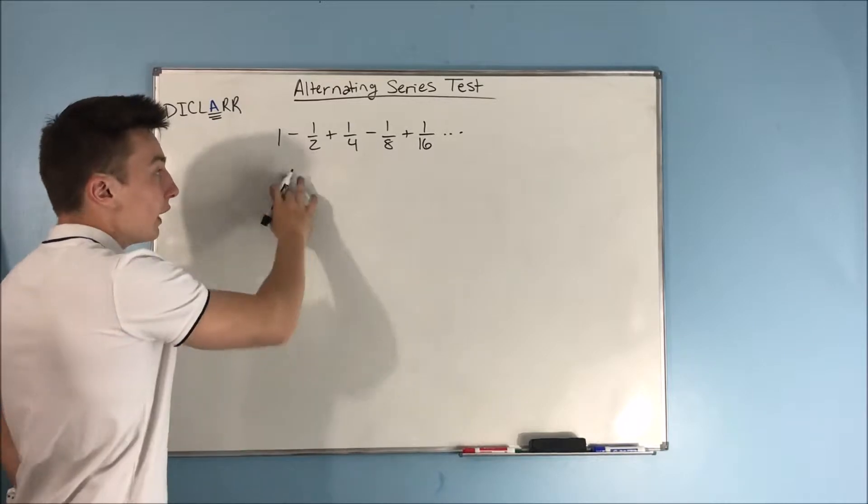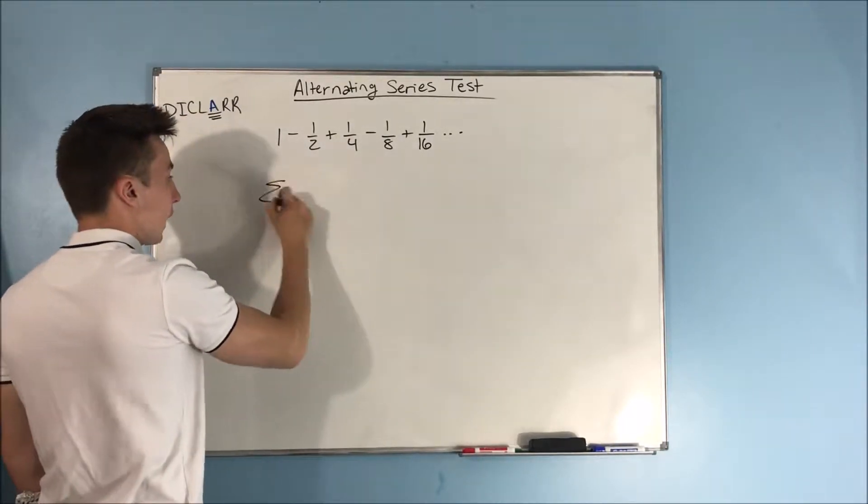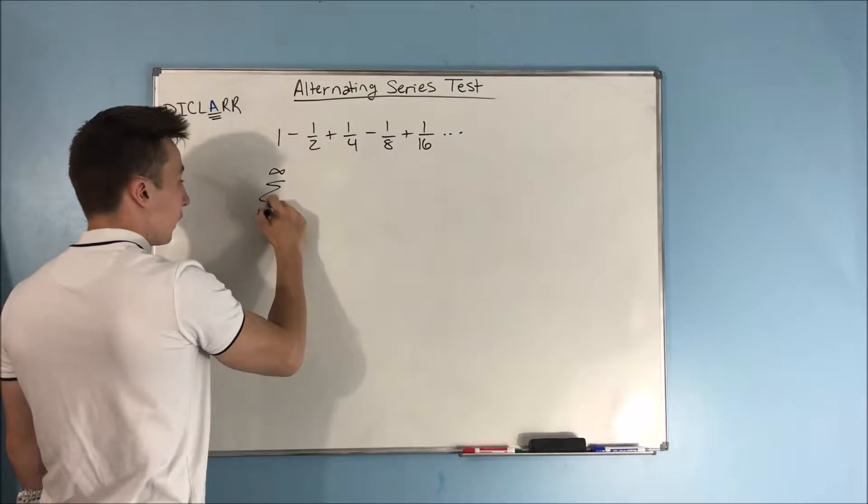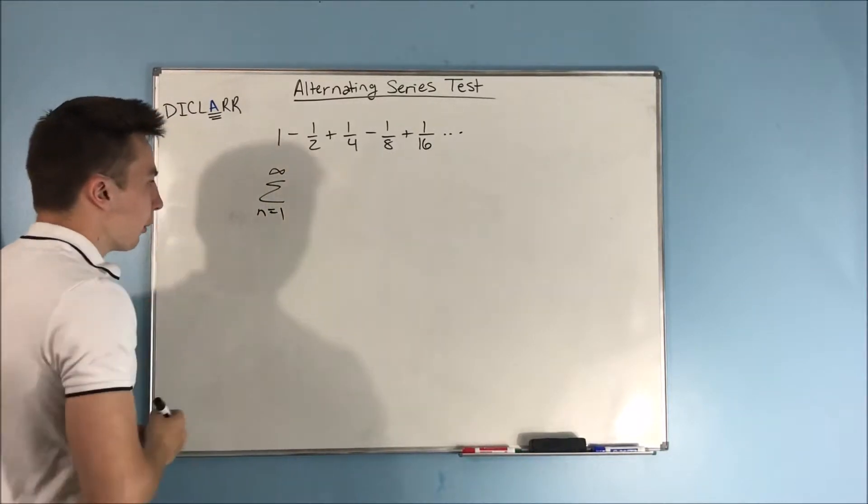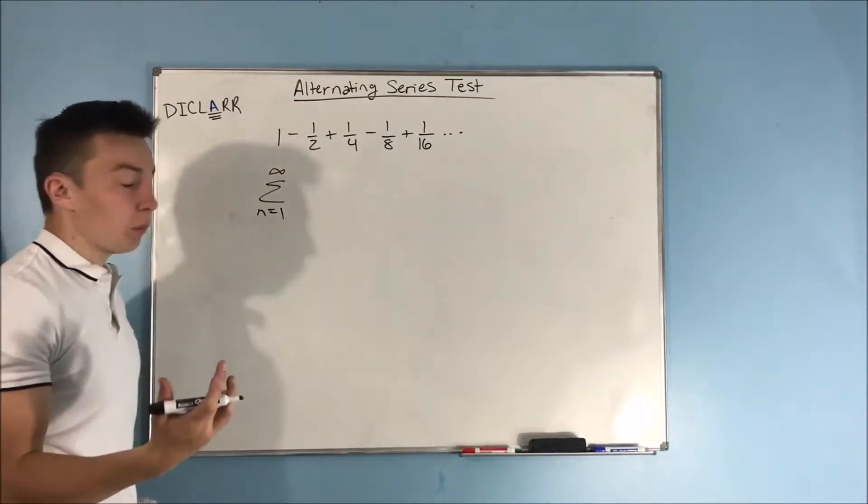Alright, now writing this as an actual sum, this is kind of how we're used to seeing it, right, in this sum notation. The sum from n equals 1 to infinity of, well, what? Well, actually, it'd be probably a little easier if we did n equals 0.